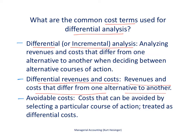There's another term on this slide called avoidable costs. Those are the costs that can be avoided by selecting a particular course of action, and therefore avoidable costs are treated as differential costs. As an example, if we are trying to figure out whether to drop our desktop computer product line, it may be that we are able to eliminate costs related to the direct materials that go into making those computers — those would be considered avoidable costs and part of our differential analysis.